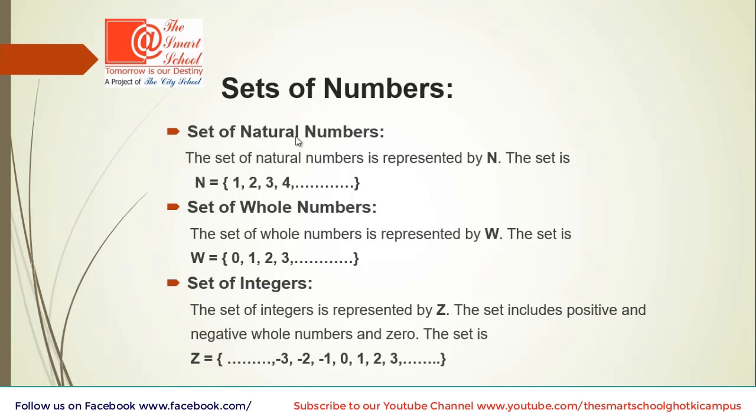Now, set of natural numbers. The set of natural numbers is represented by N and the set is 1, 2, 3, 4 and onwards. And set of whole numbers, you know the difference? Yes, exactly. Only 0 is added in natural numbers to make it whole numbers. So, 0, 1, 2, 3 and onwards are whole numbers and it is represented by W.